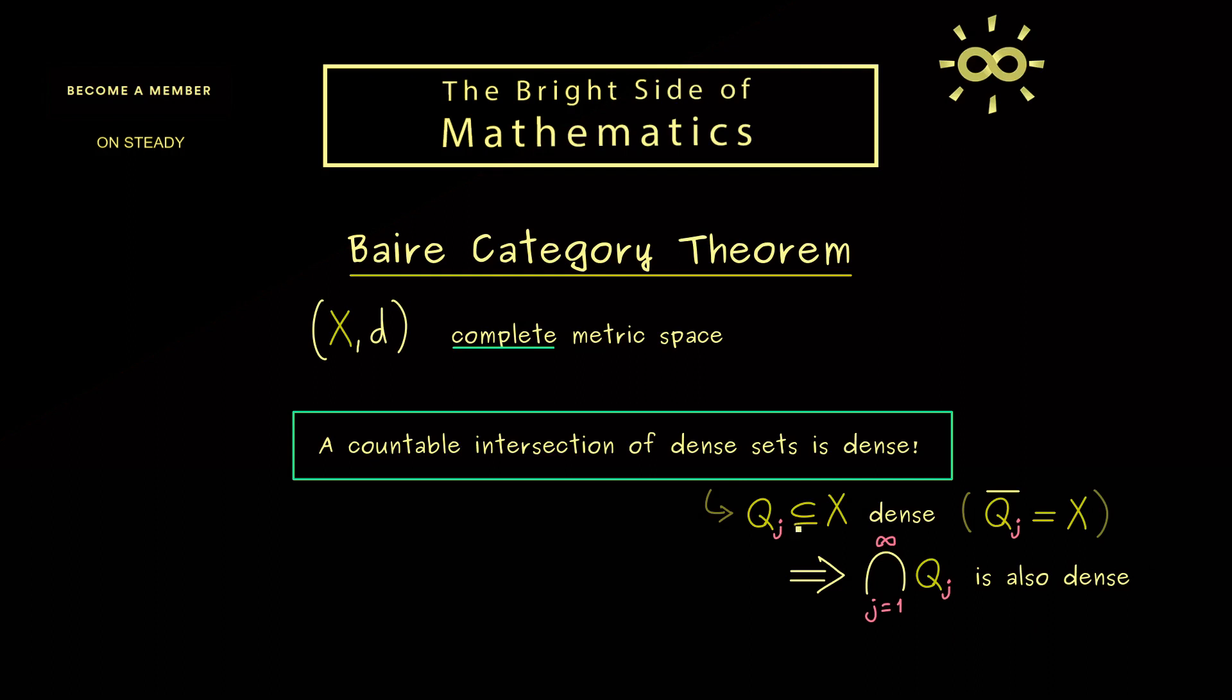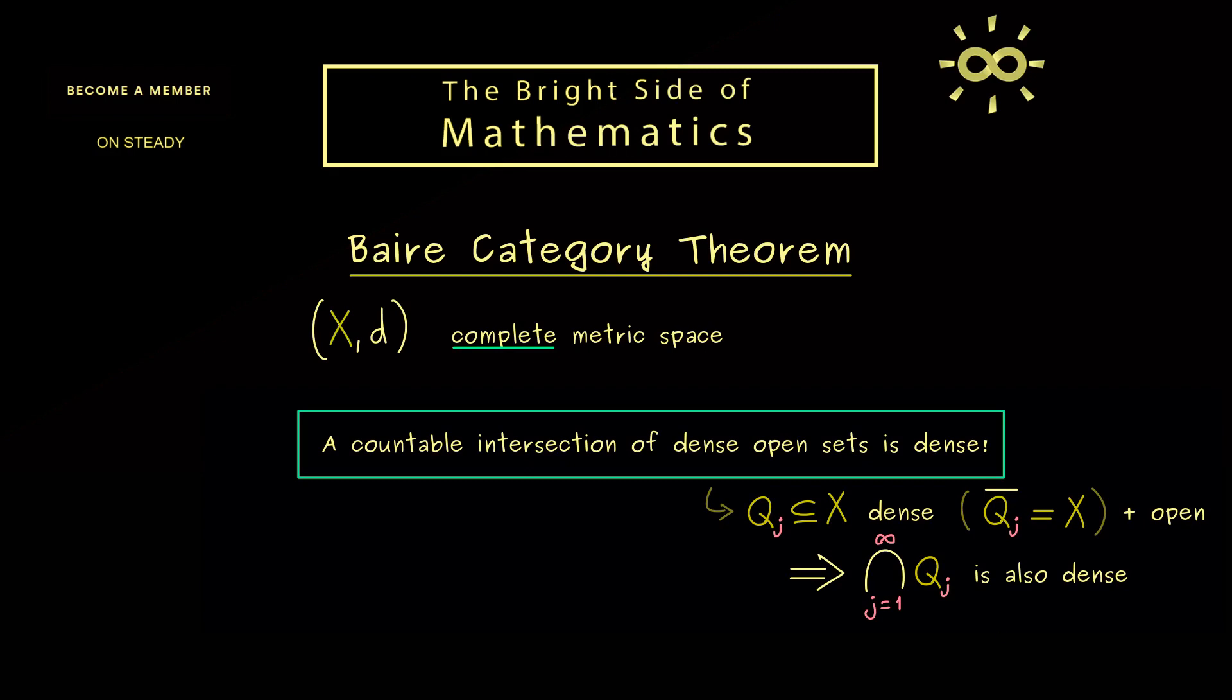So you see, we only have countable many sets Q_j. But then the claim of Baire is that this intersection is still a dense set. Now after recording this part, I see I missed one important ingredient here, namely the sets Q_j should also be open sets. So we definitely need to include openness here. Hence the sentence reads, a countable intersection of dense open sets is dense again. This is one version of the Baire category theorem you definitely can remember.